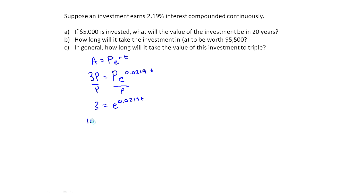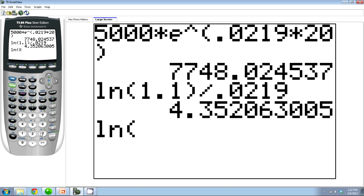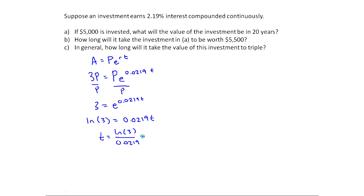And I get 3 equals E^(0.0219T). Just like before, I'm going to take the natural log of both sides. Ln of 3 equals, and when I take Ln, remember what happens over here? I get 0.0219T. So I can solve for T and say T is Ln of 3 over 0.0219. Calculate that on the calculator. And I end up with 50.16. And so this is in years. Why so long? Well, it's a really small interest rate overall.